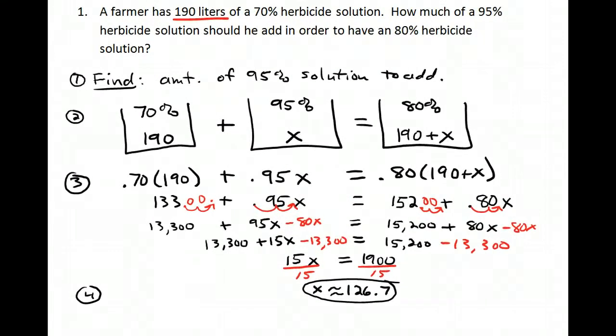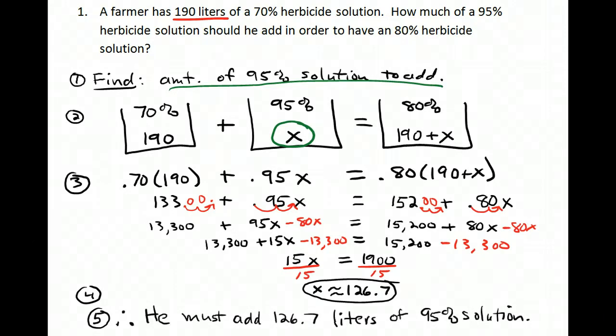When I solve this, I get x equals approximately 126.7. In your assignment, when you do these problems, it will tell you what to round your answers to. I rounded this to the nearest tenth. Remember what x stood for: x stood for the amount of 95% solution I have, which is what I'm asked to find. So now I can write my conclusion: He must add 126.7 liters of the 95% solution.